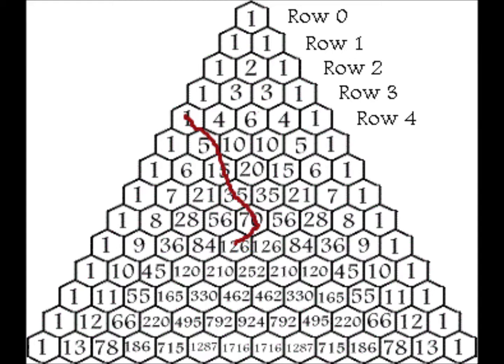My next example — sorry for the paper shuffling — is 1, 3, 6, 10, and that equals 20. If you do the math: 10 plus 6 is 16, plus 3 is 19, plus 1 equals 20. My last and final example is 1 plus 6 plus 21 equals 28 — because 1 plus 6 is 7, plus 21 is 28.